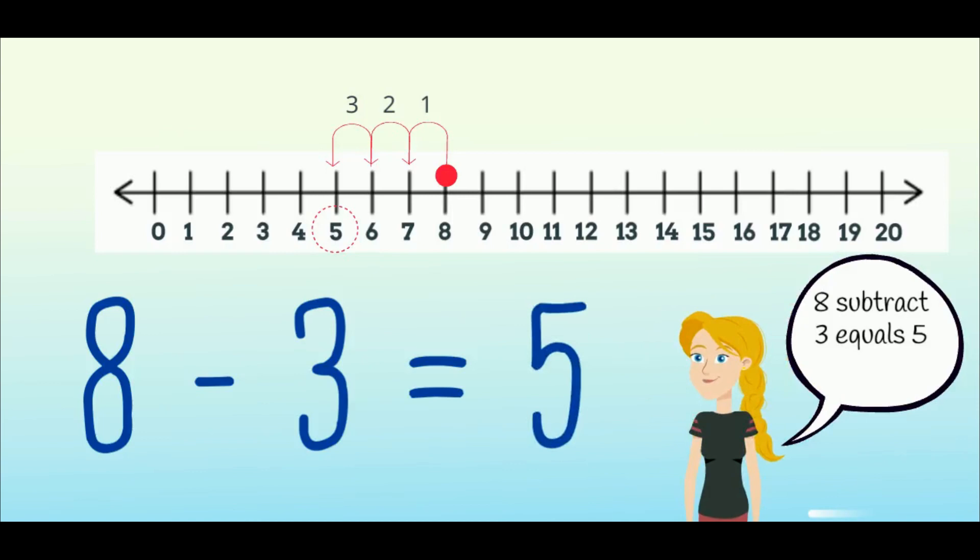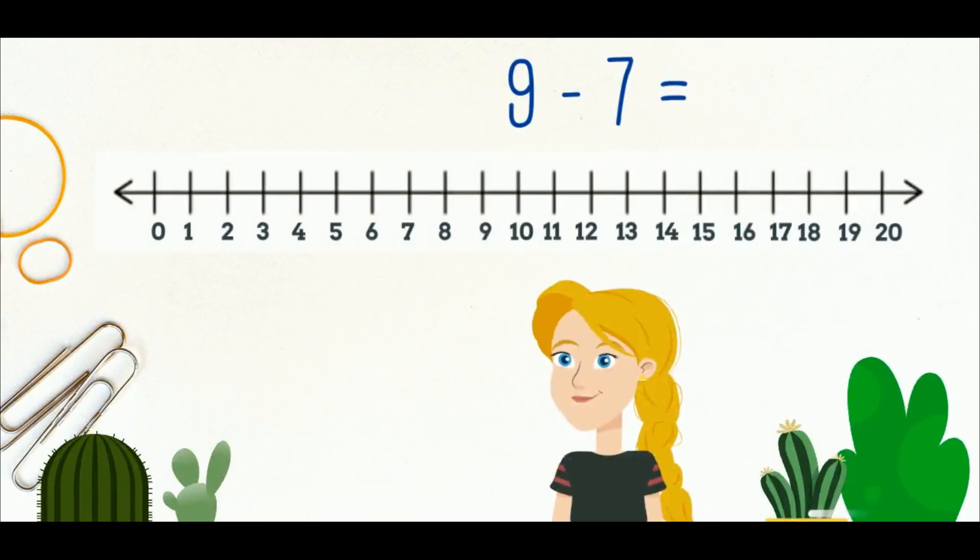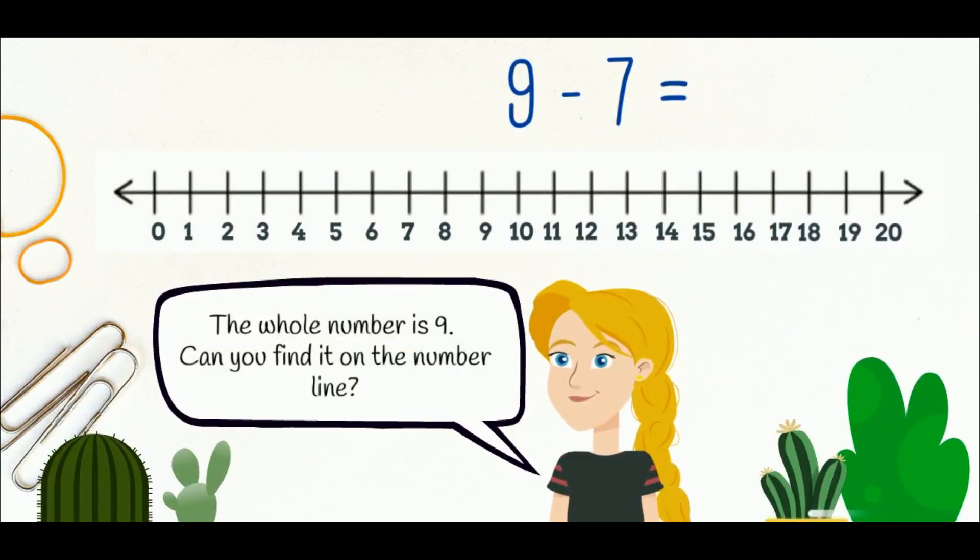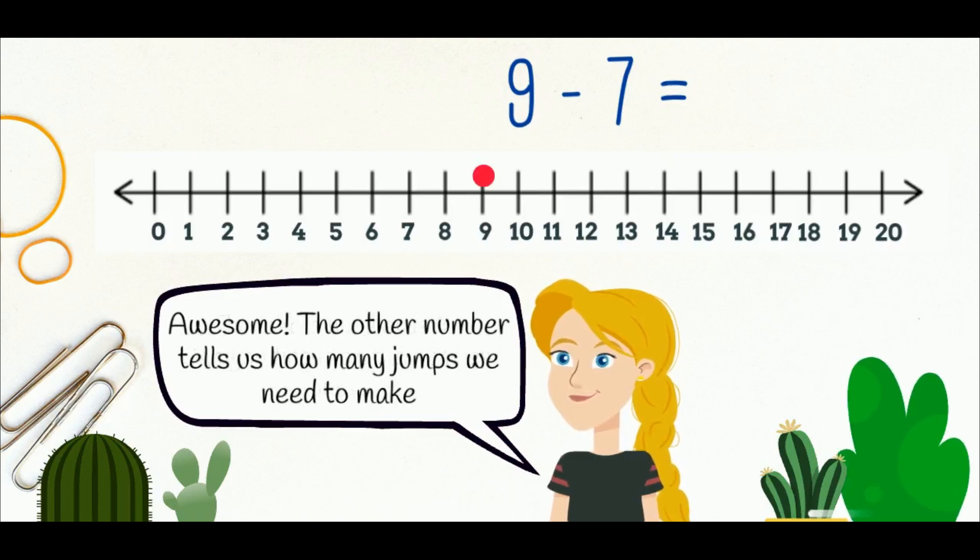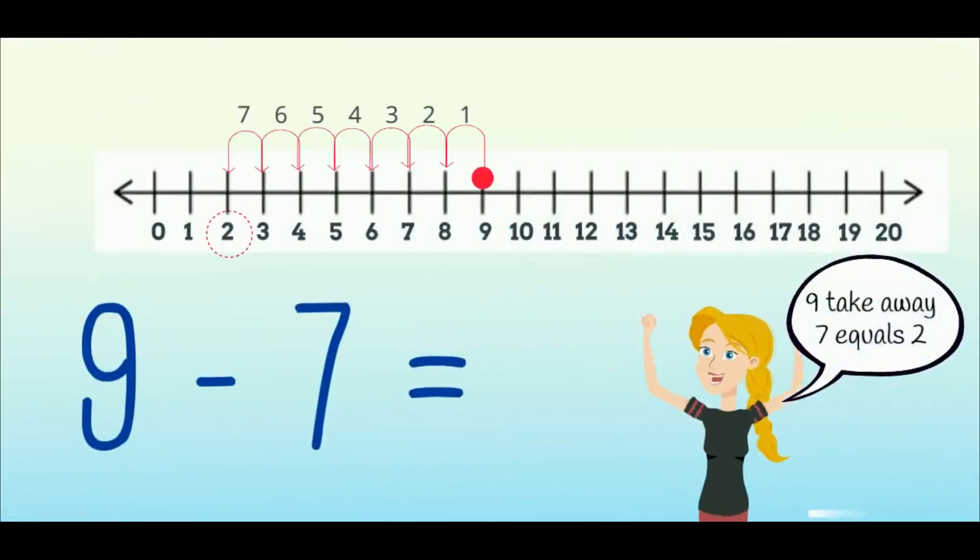Well done! Let's have another go. Nine take away seven. Nine is the whole number so we find that on the number line, and the other number tells us how many jumps we need to make backwards. That's right, it's seven: one, two, three, four, five, six, seven. Well done! So nine take away seven equals two.